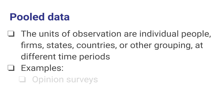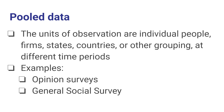Examples of pooled data would include opinion surveys, including political opinion surveys, which we see a lot of during election years. The General Social Survey has hundreds of questions that are administered every year to several thousand people. You can download any of that data, which will contain a mix of different individuals' responses and different years in which people responded. The people who responded in 2015 are not necessarily the same people who responded in 2020.